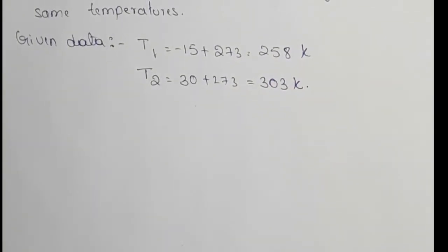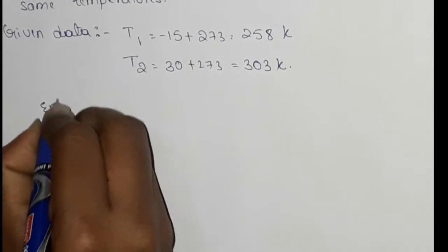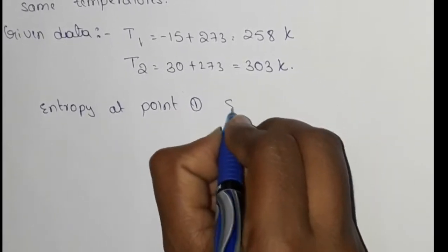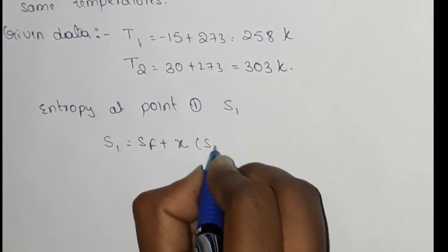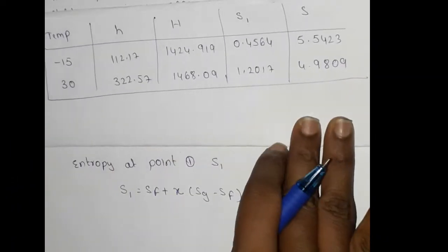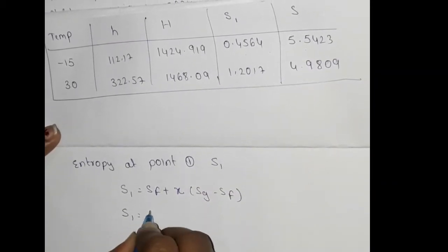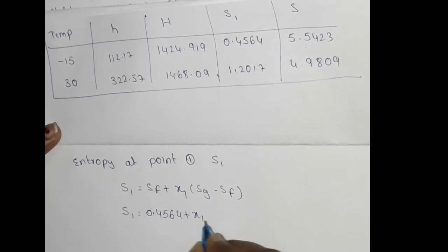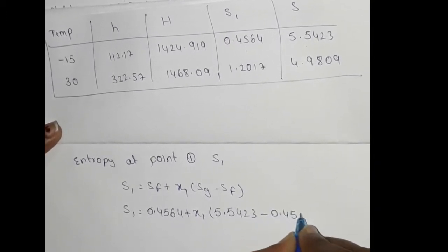Next step: we find entropy at point 1. S1 formula is Sf plus x1 into (Sg minus Sf). At temperature minus 15 degrees centigrade, from the table: Sf equals 0.4564 and Sg equals 5.5423. So S1 equals 0.4564 plus x1 into (5.5423 minus 0.4564), which gives S1 equals 0.4564 plus 5.0859 x1.